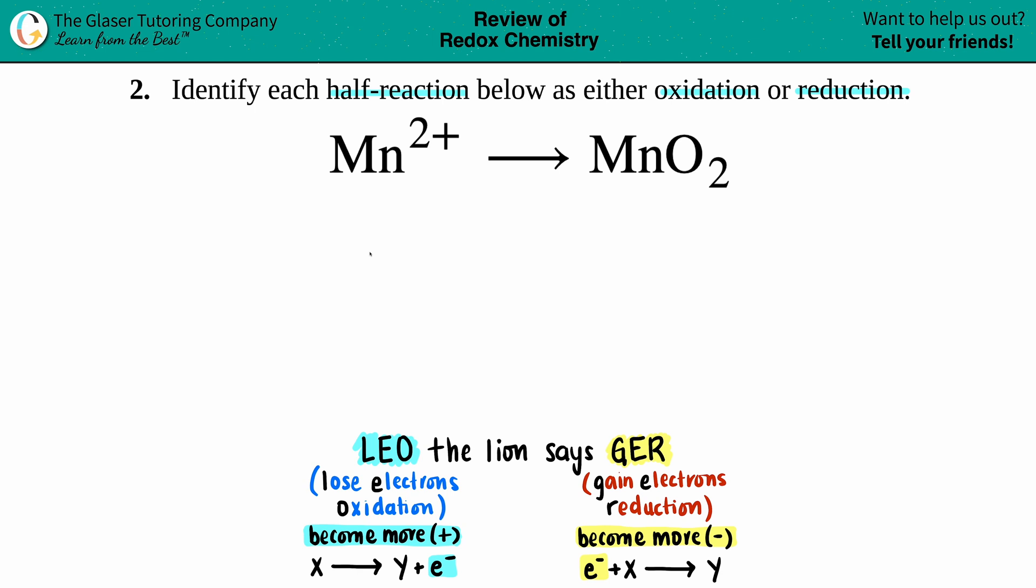Just pick the elements that are the same on both sides. For example, since I have an Mn on the left and an Mn on the right, I'm only going to focus on that element. My Mn had a 2+ over here, and let's see what the charge of the Mn is going to be. Remember, to get the charge, we take the subscripts.